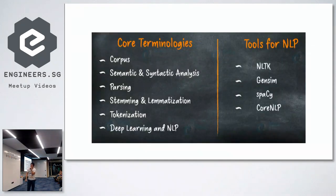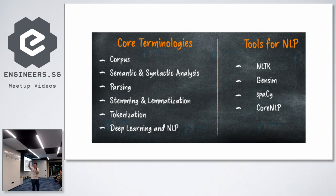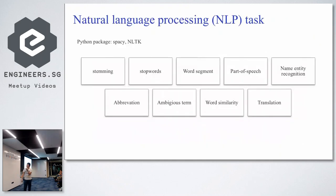Here are some terminologies you'll encounter when starting an NLP project: corpus is the text document string you pass into your model, semantic similarity, stemming, lemmatization, and others. For tools, those writing in Python may come across Gensim, spaCy, and NLTK. Let's deep dive into specific NLP tasks you can use with these packages — stemming, stop words, word segmentation, part of speech, named entity recognition, abbreviations, ambiguous terms, and more.